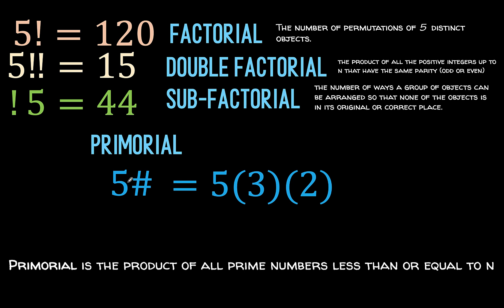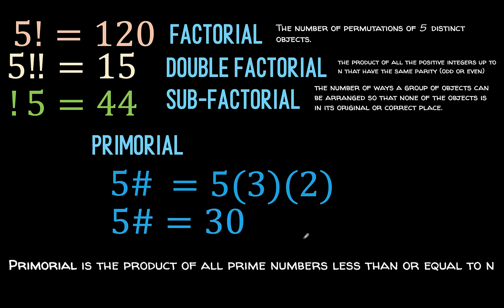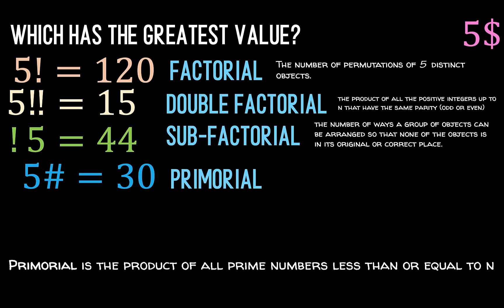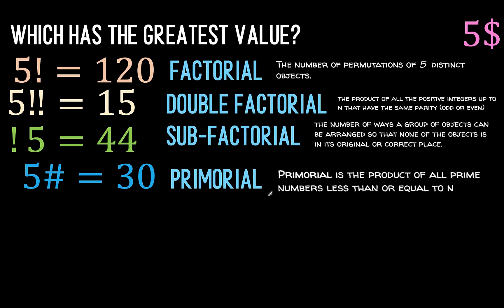So here the prime numbers are 5, then 3, then 2. 4 is a composite number and 1 is neither prime nor composite. So multiplying these gives us 30 for 5 primorial. This has some applications in number theory.